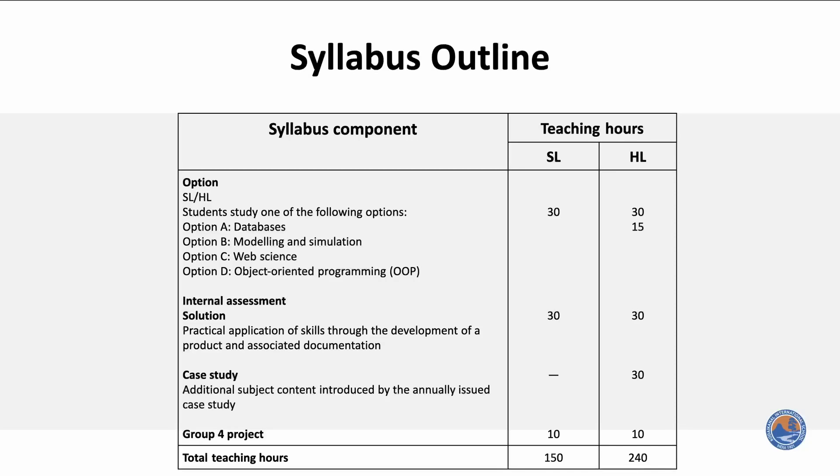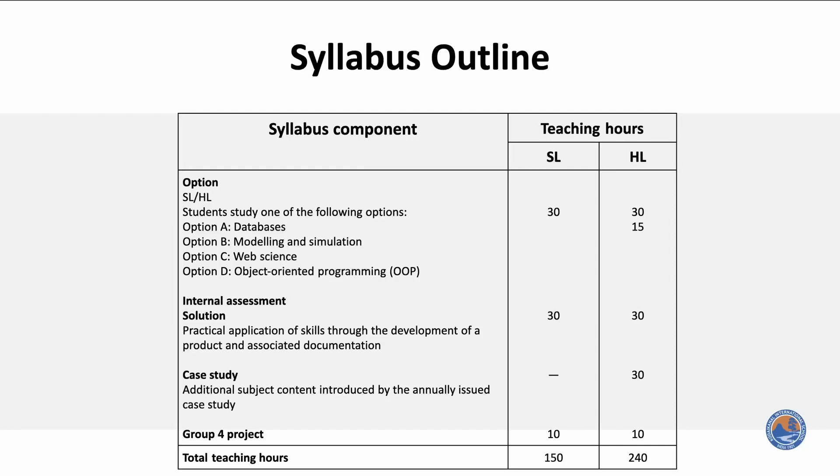In Paper 2, higher level and standard level students are given the choice to select one of the options from four areas: databases, modeling and simulation, web sciences, and object-oriented programming.